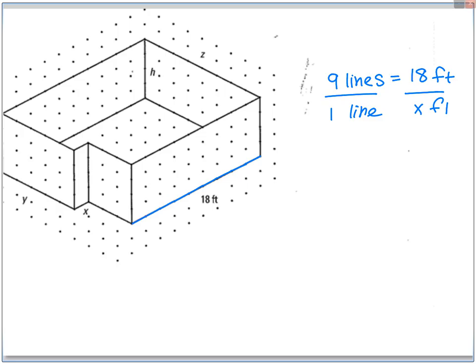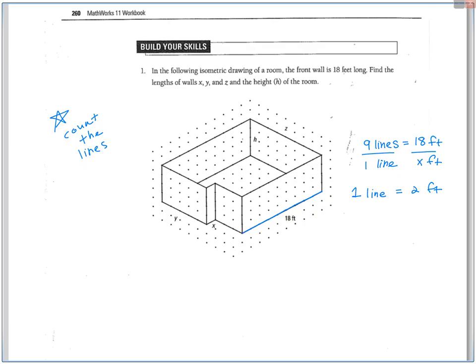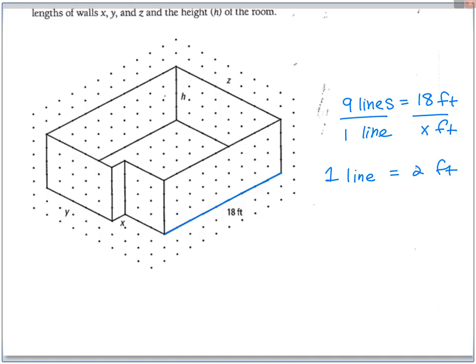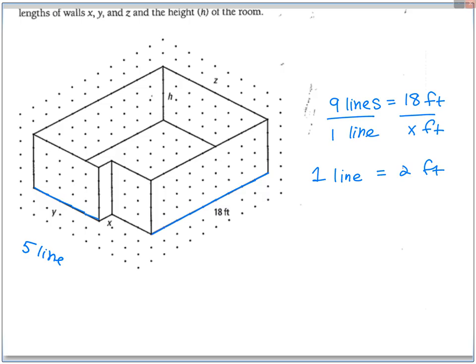Then we could solve for one line using cross multiplication. The answer would be two - one line is equal to two feet. You could just cross multiply if you don't see that right away. So that way we could just jump over here into this picture and figure out how long is y. One, two, three, four, five lines. So if one line is two, five lines would equal ten feet.